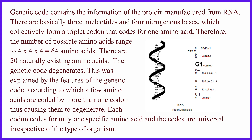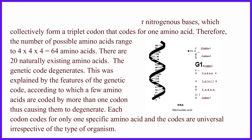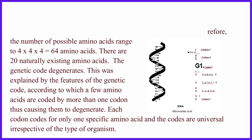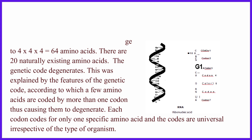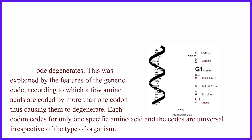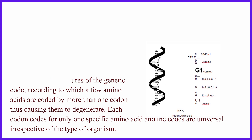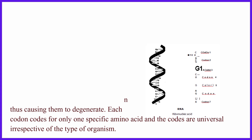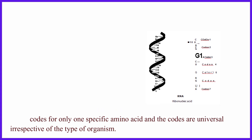There are 20 naturally existing amino acids. The genetic code degenerates — this was explained by the features of the genetic code, according to which a few amino acids are coded by more than one codon, thus causing them to degenerate. Each codon codes for only one specific amino acid, and the codes are universal irrespective of the type of organism.